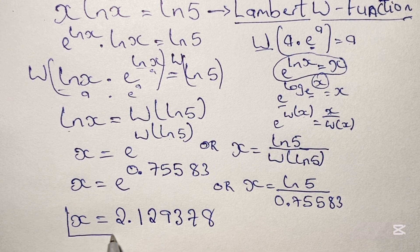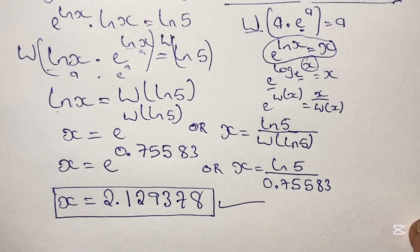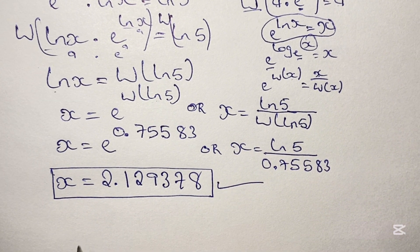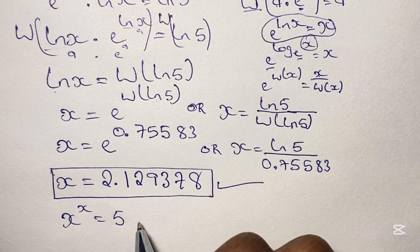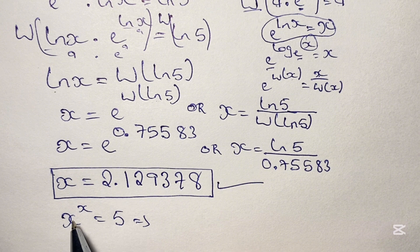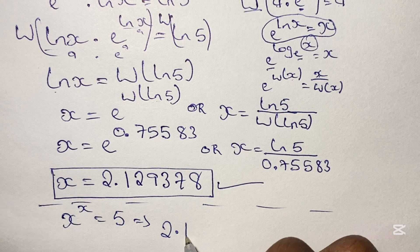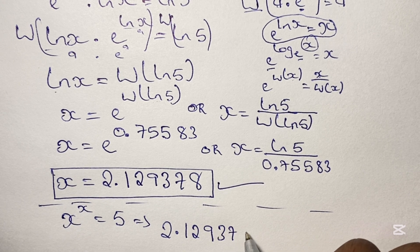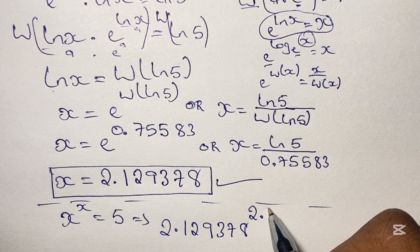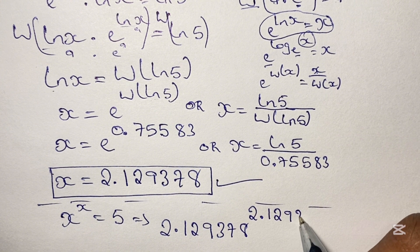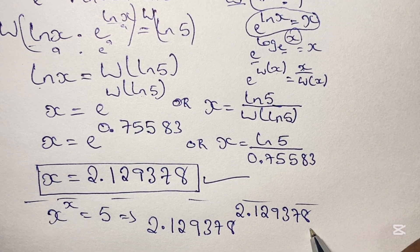We can plug this value back into the original equation to verify. We have 2.129378 raised to the power of 2.129378. Plugging this into a calculator, the result is astonishing — this equals 5, confirming our solution is correct.